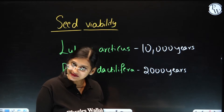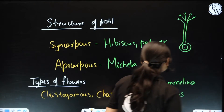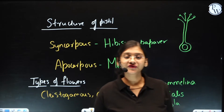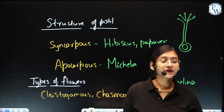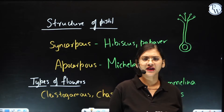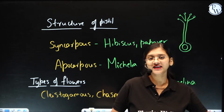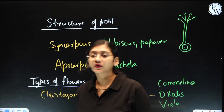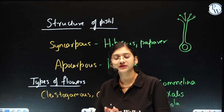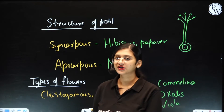Moving further — structure of the pistil. So few things you would have already studied in the chapter morphology in flowering plants or some of the chapters of class 11 standard. But here we are discussing the examples that you have to remember which come under sexual reproduction in flowering plants.